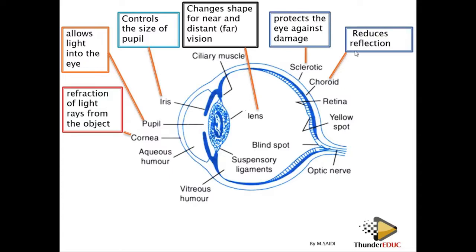The choroid is the dark part of the eye. It is important in reducing internal reflection. When light rays come in and are focused on the retina, some light may try to scatter and reflect back. The function of the choroid is to absorb that light so it is not reflected back, which would otherwise cause different or distorted images in the eye.